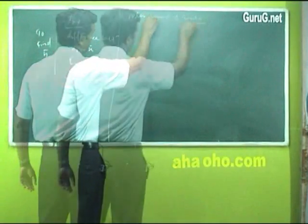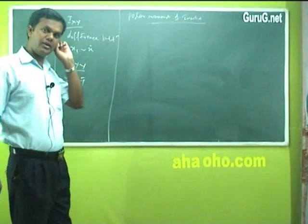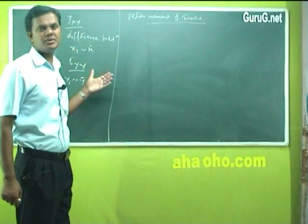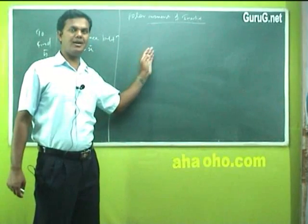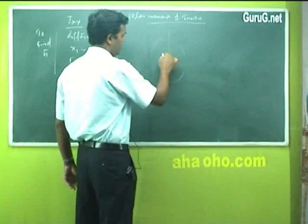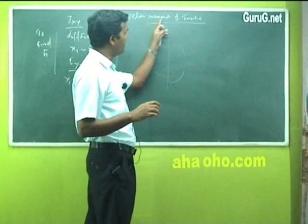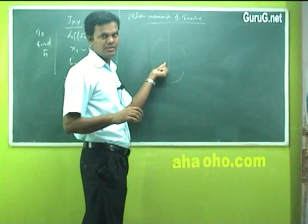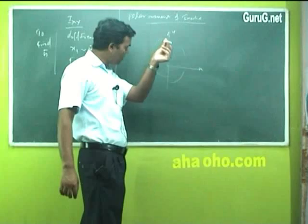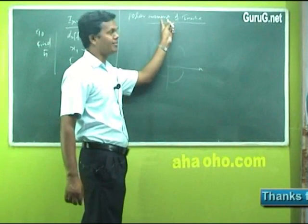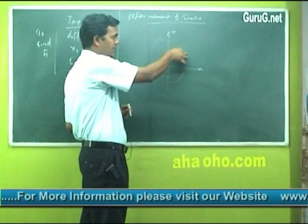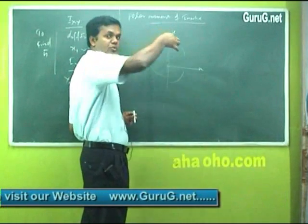Next, there is something called polar moment of inertia. Polar — mathematically, you know polar coordinates: Cartesian coordinates are x, y, z while polar coordinates are theta, r, etc. Whatever plane you have sketched, you will have x-y or y-z planes. Any axis which is perpendicular to that plane — if I find the moment about that axis, it becomes the polar moment of inertia.